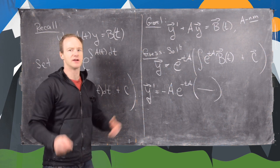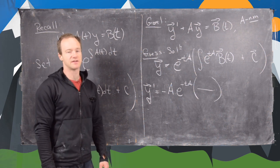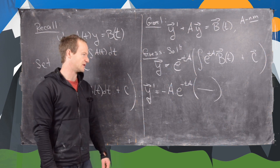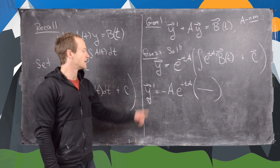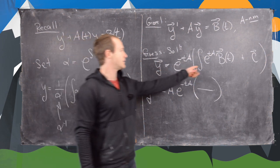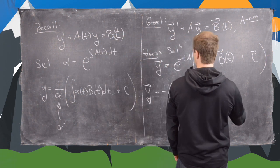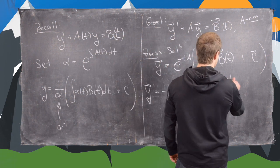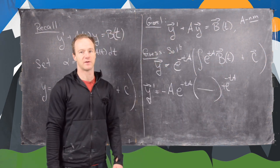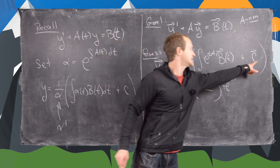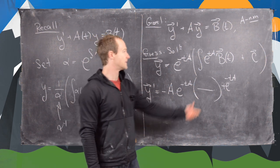You can check that using the definition of the matrix exponential with the Taylor expansion. The next term is plus e to the minus tA times the derivative of the stuff in parentheses. But the constant vector c contributes the zero vector.